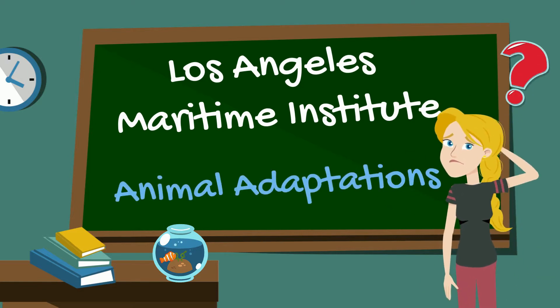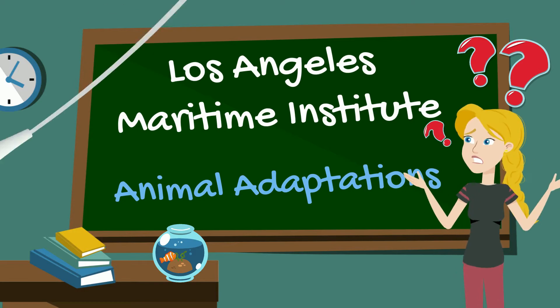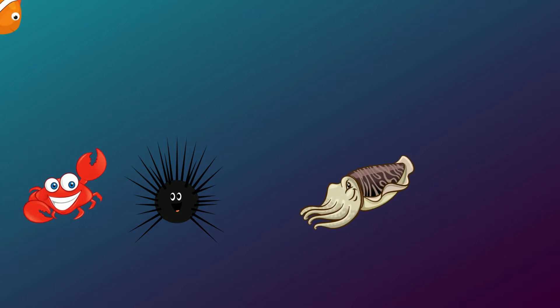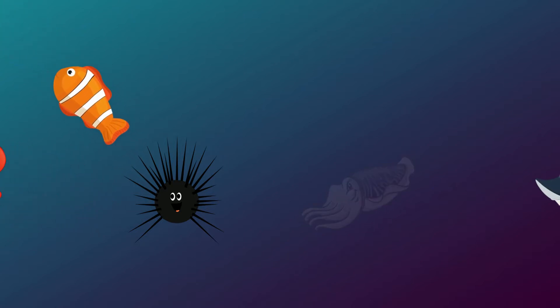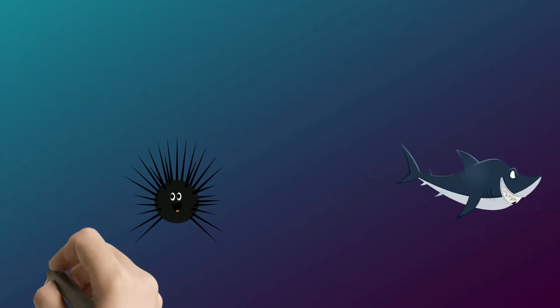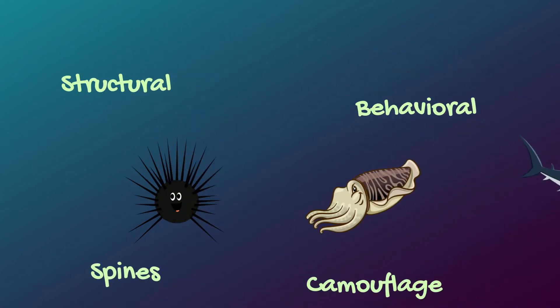What are animal adaptations? Adaptations are characteristics or traits of an animal that help it to survive in its environment. These characteristics fall into two main categories: structural and behavioral adaptations. Either or both of these types of adaptations help the animal survive.